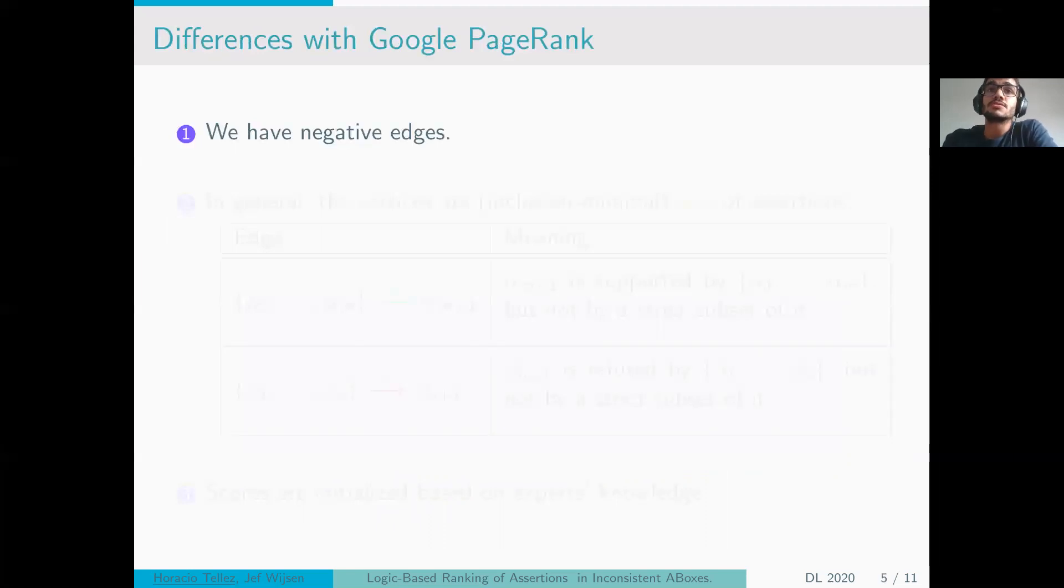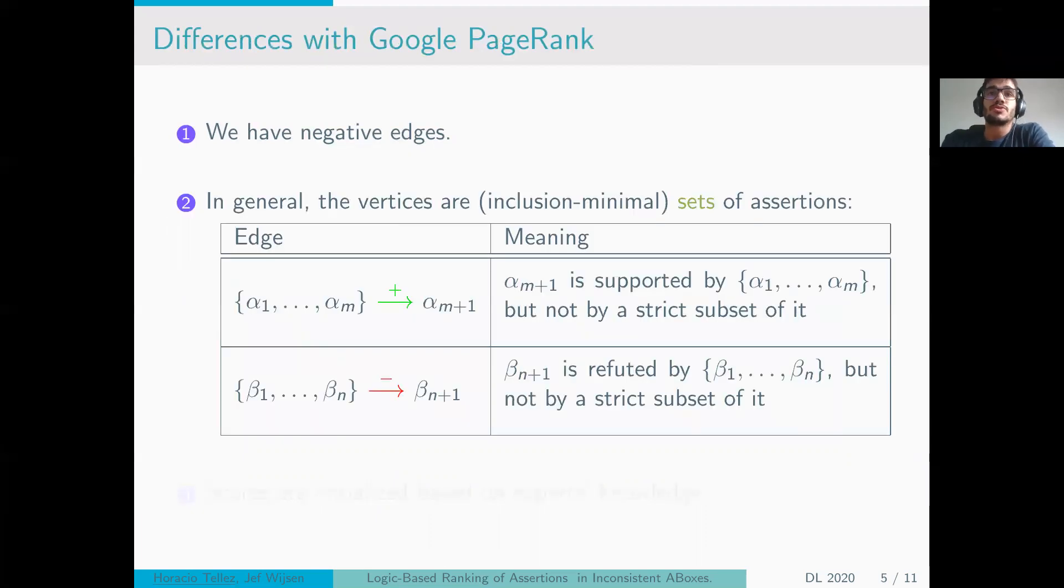Alike but different. The first difference is that we allow for negative edges. That is, we take into account positive and negative interactions in our graph, in our structure. Second, we don't only have binary relationships, but also n-ary relationships, where, for example, when we have a group of assertions with a positive edge toward an assertion, it means that the whole group of assertions is supporting the assertion and not only a subset of the group. In the same way for the negative assertions. Third, we use expert knowledge for an initial credibility, and we will use it to enhance our scores.